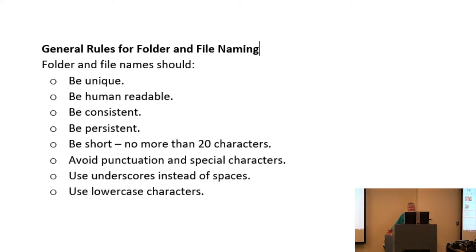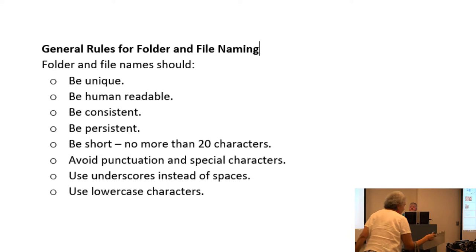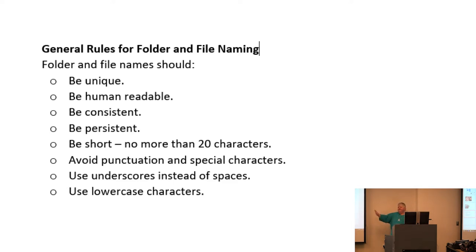The next most important thing is that it should be human readable. Why does that matter? Sharing — and as someone said, so that when you go back later and you have 75 files, you have a sense of what each one is. We want to be consistent. It's nice to have a kind of formula for how to create these names before you start. Having the date is nice, and then having some keywords.